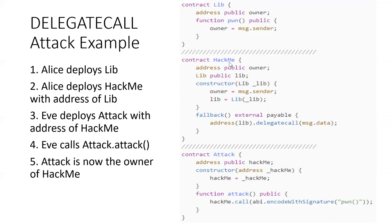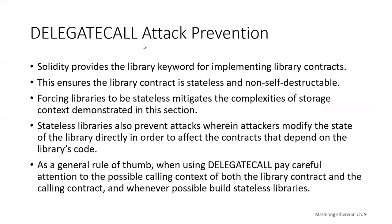She can change the owner of hack me from being Alice to being herself. That's a pretty serious problem if you've given up ownership of your contract, particularly if there's money in it. And in fact, this happened in real life. We'll talk about some real-life examples in a minute.